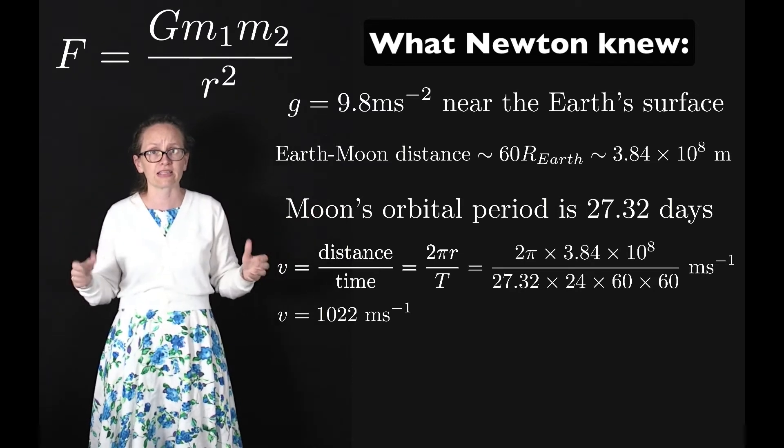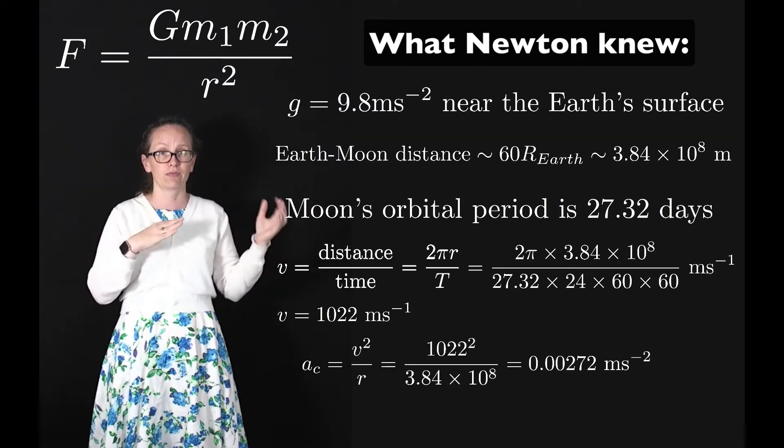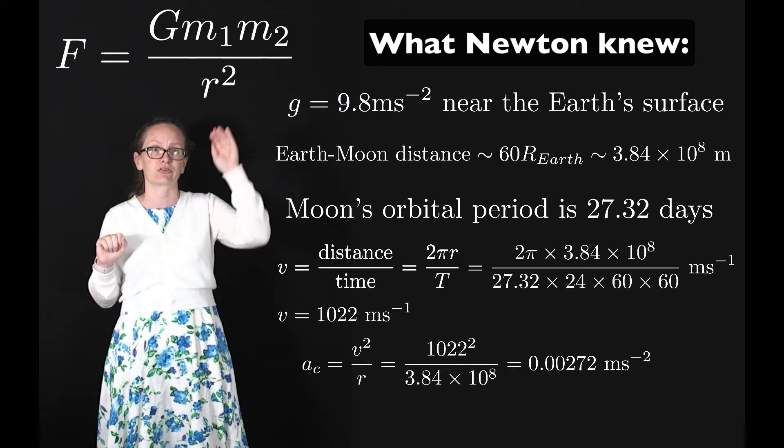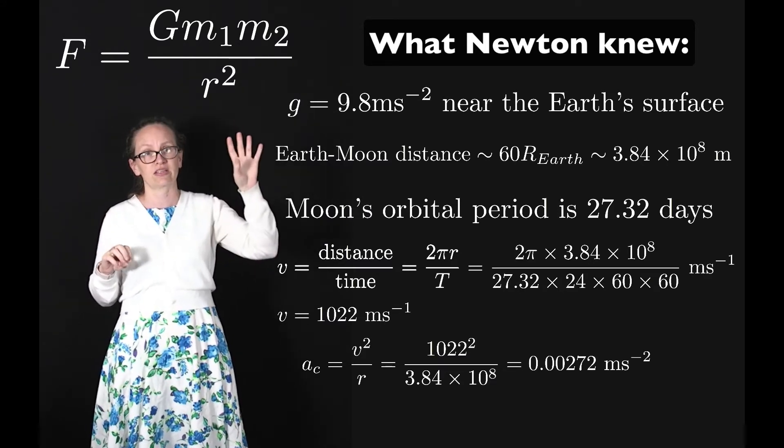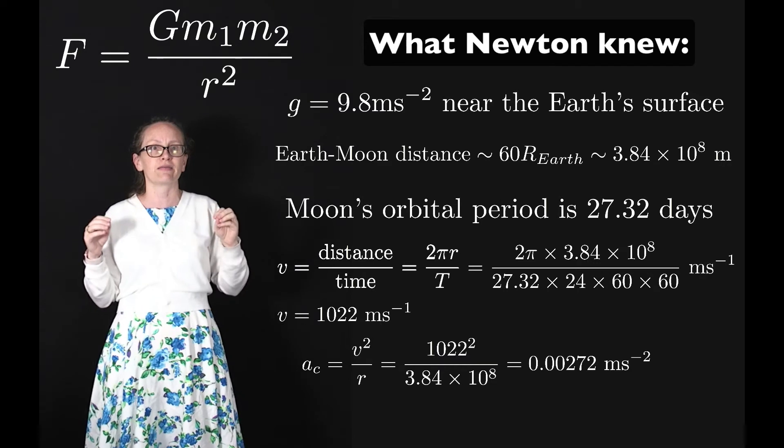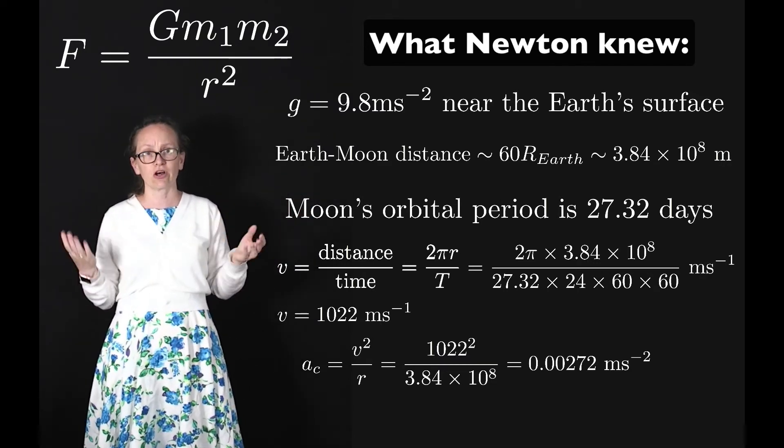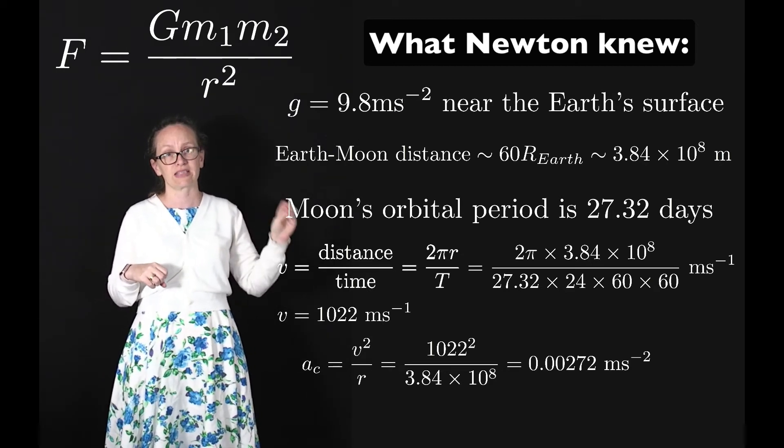From this we can work out the centripetal acceleration of the Moon around the Earth, just using our equation that the centripetal acceleration is equal to v squared divided by r. This is equal to 1022 squared divided by 3.84 times 10 to the 8, which when we solve it we get 0.00272 meters per second per second.